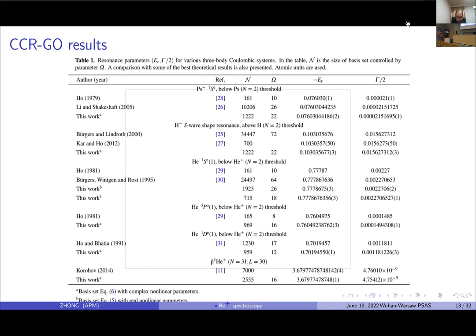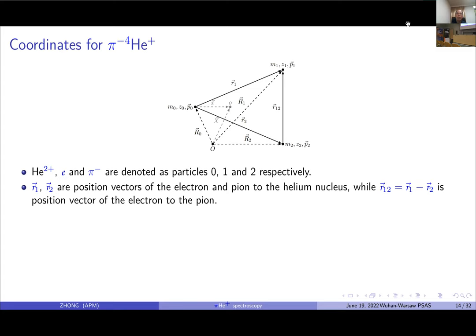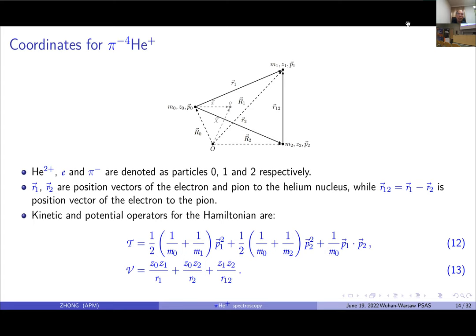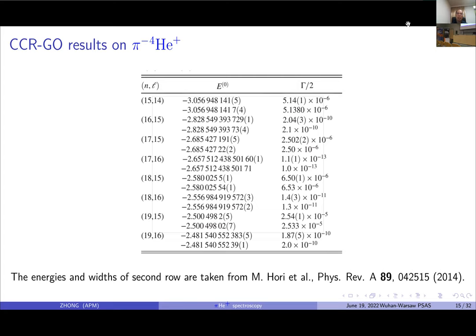Here is the coordinate we use for pionic helium. You can see the kinetic and potential operators for the Hamiltonian are expressed as follows. Here is our result of the energy and the width for the metastable states of pionic helium. We are interested in these two states that can be calculated to very high precision to have more than 13 reliable digits or more.